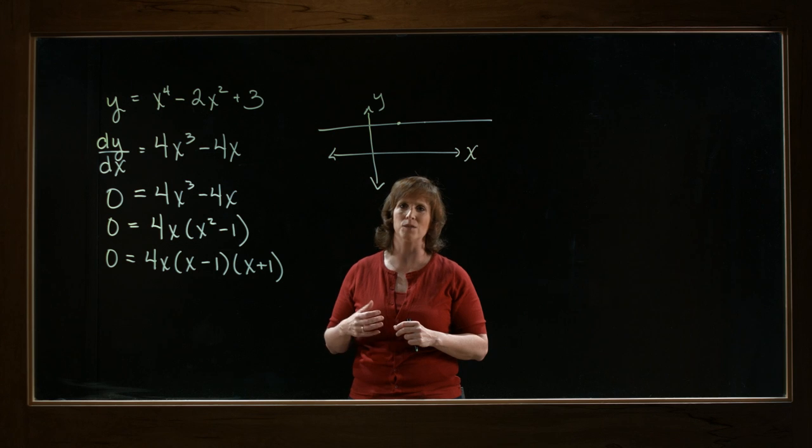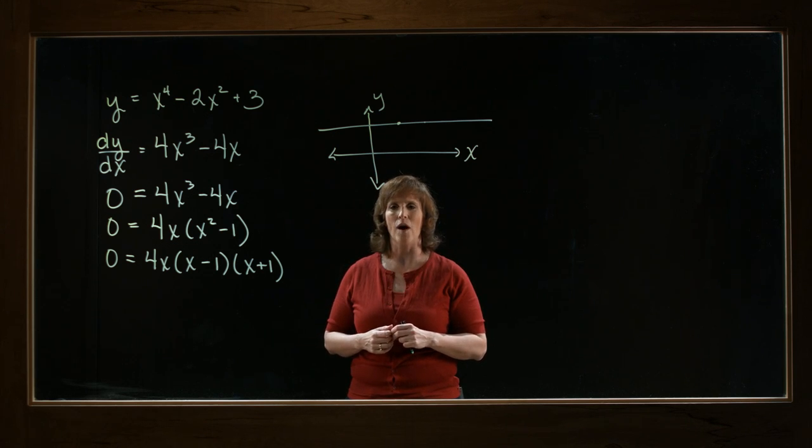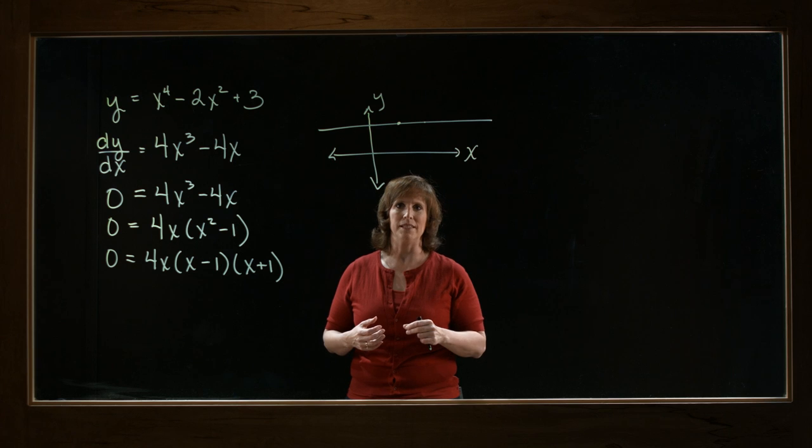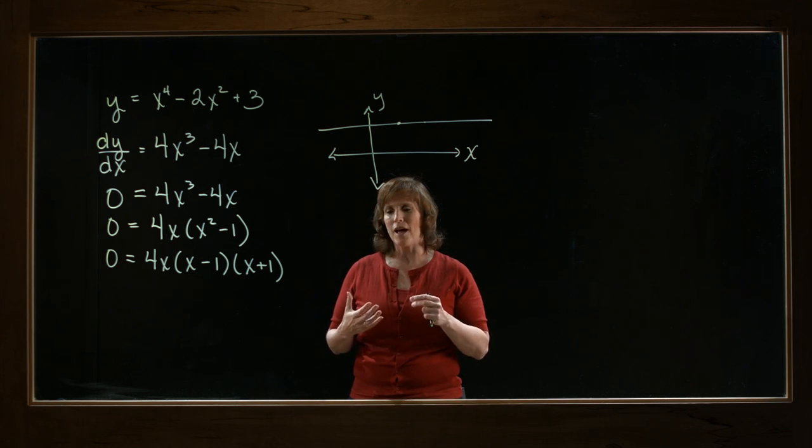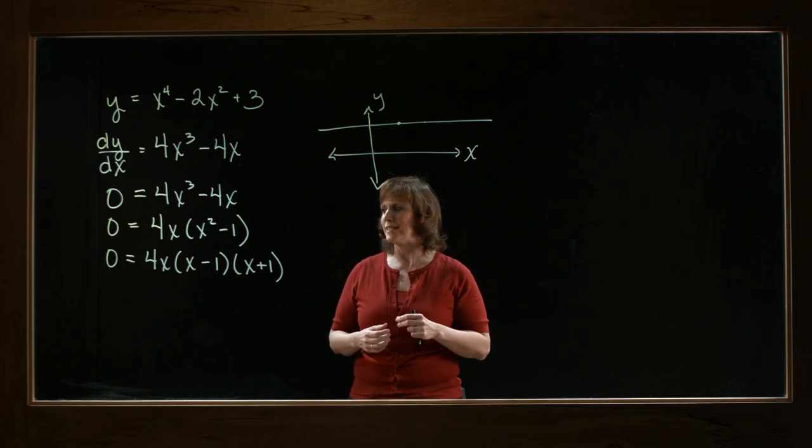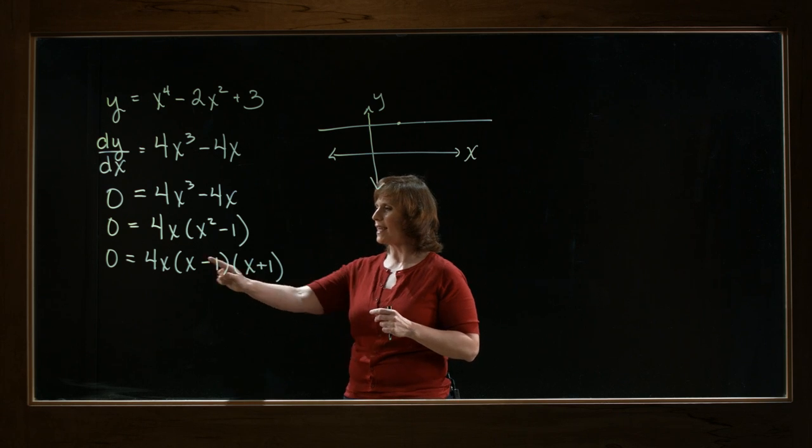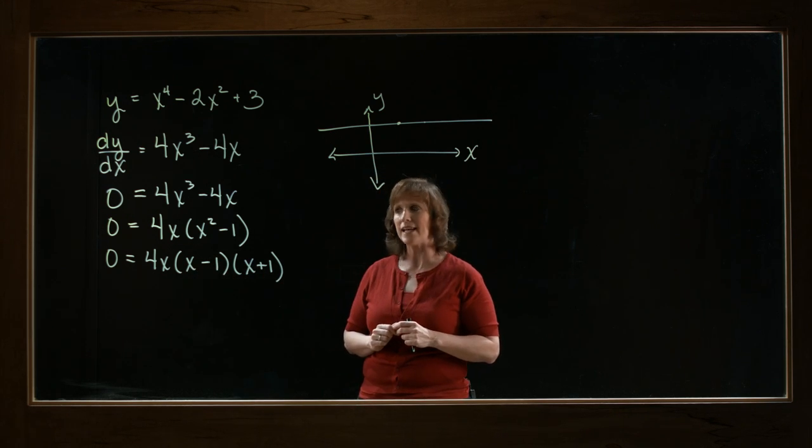Think about it. 2 times 3 is 6. 1 half times 2 is 1. 0 times 7 is 0. Negative 8 times 0 is 0. Whenever you multiply anything by 0, the result is 0. So we're going to take each of these pieces and set it equal to zero.